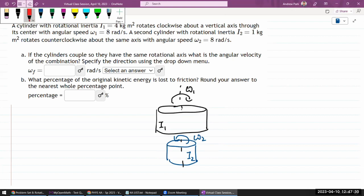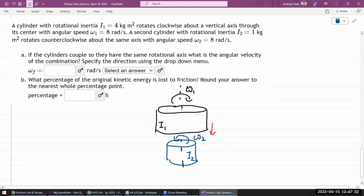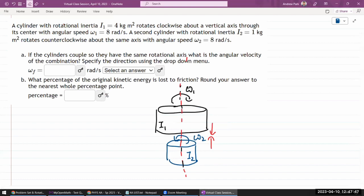I thought what I vaguely skimmed before. If the two cylinders couple so that they have the same rotational axis, what is the angular velocity of the combination? So this is the kind of physical setup that you have to think through.